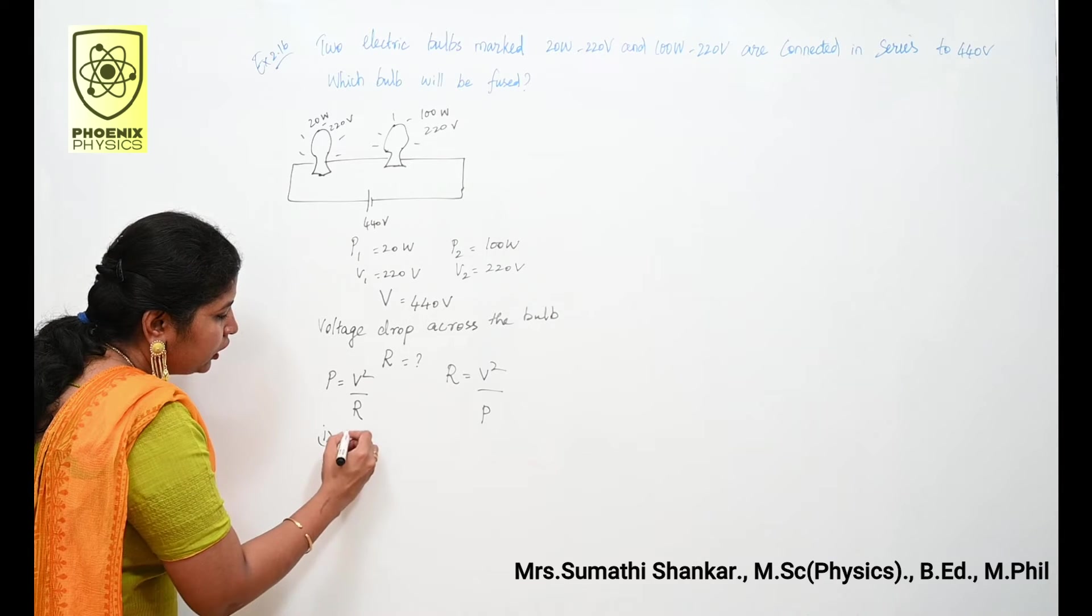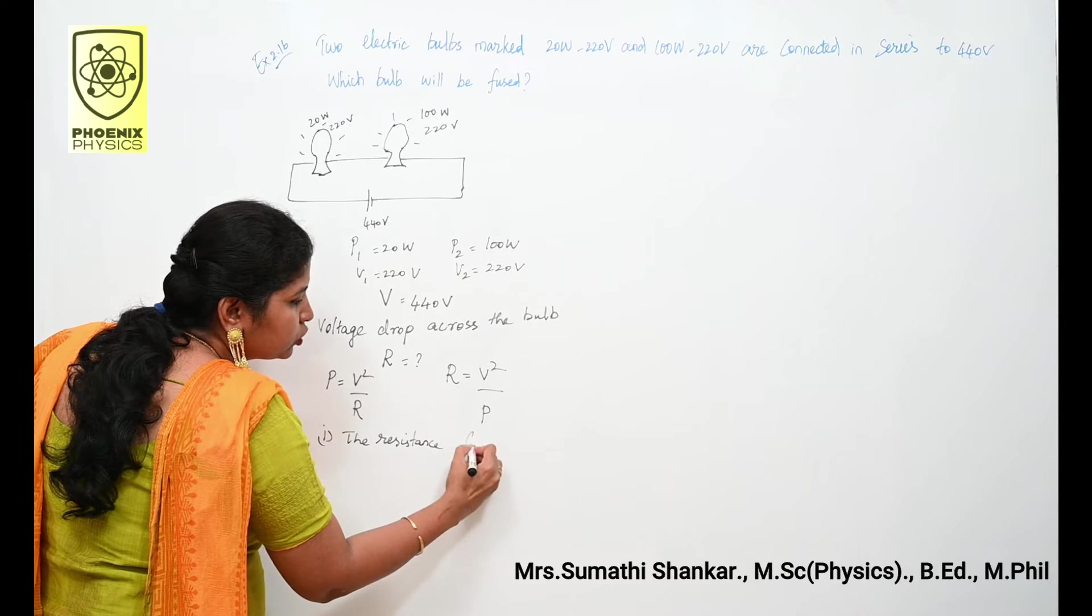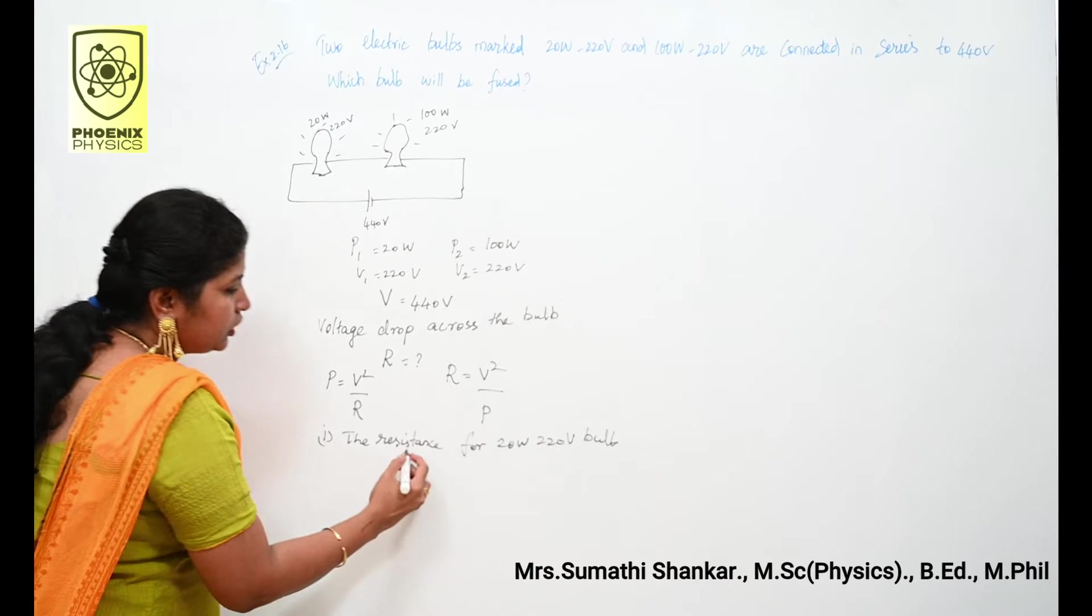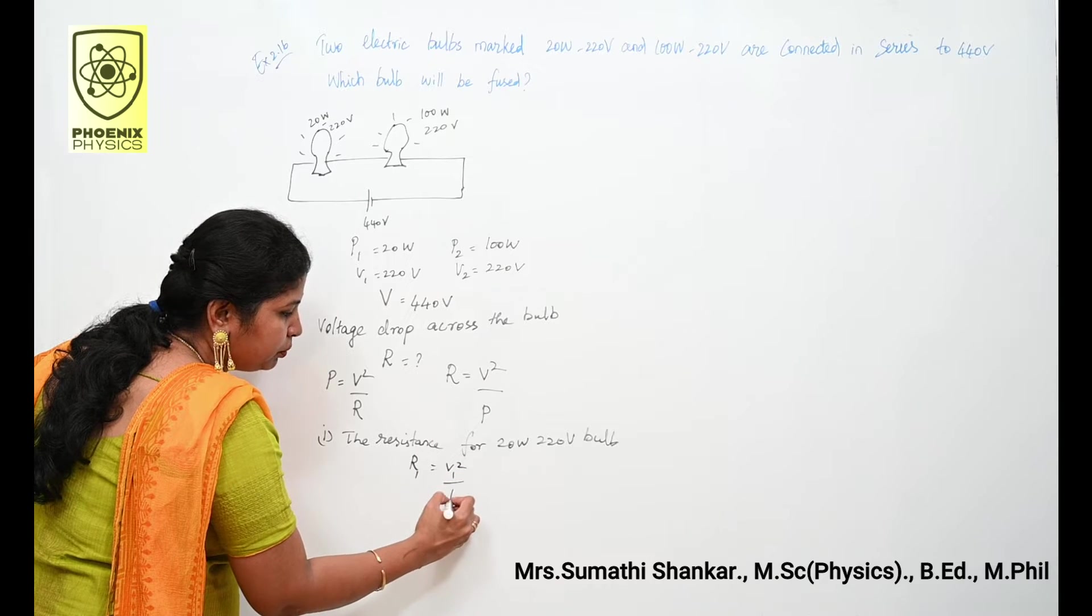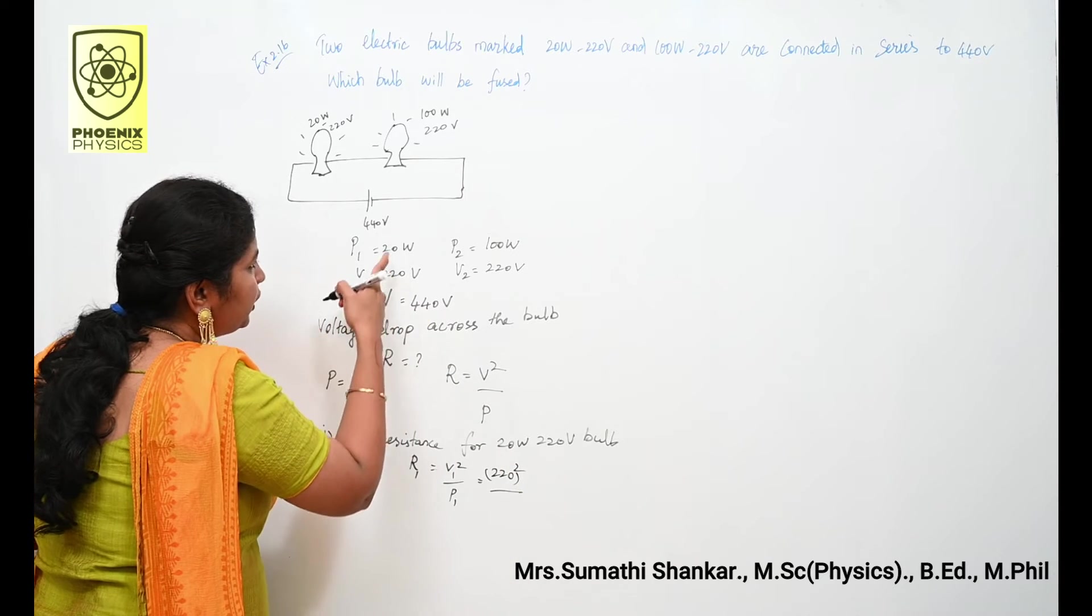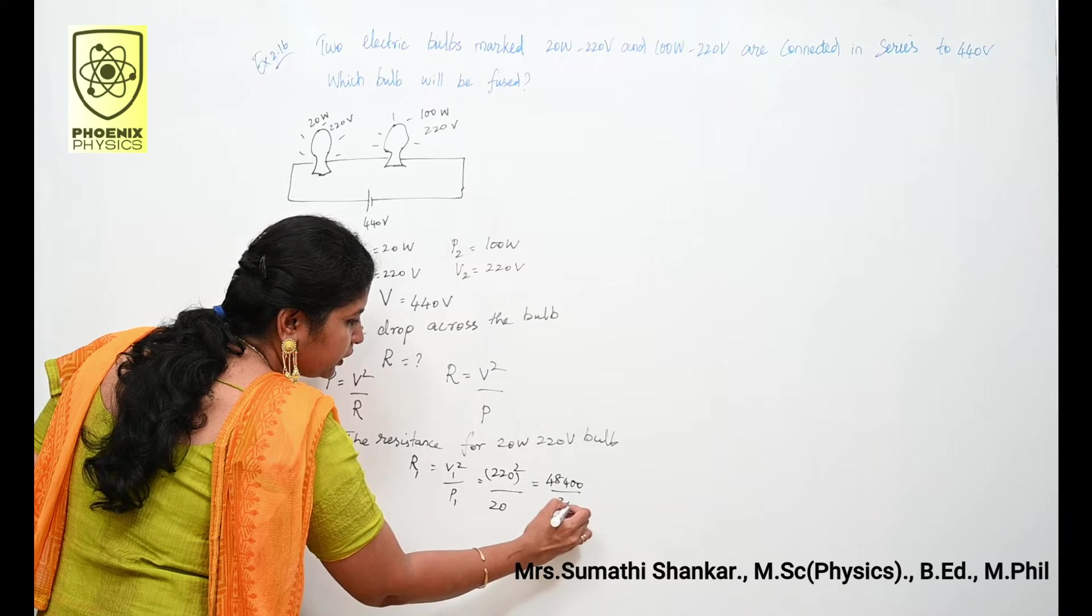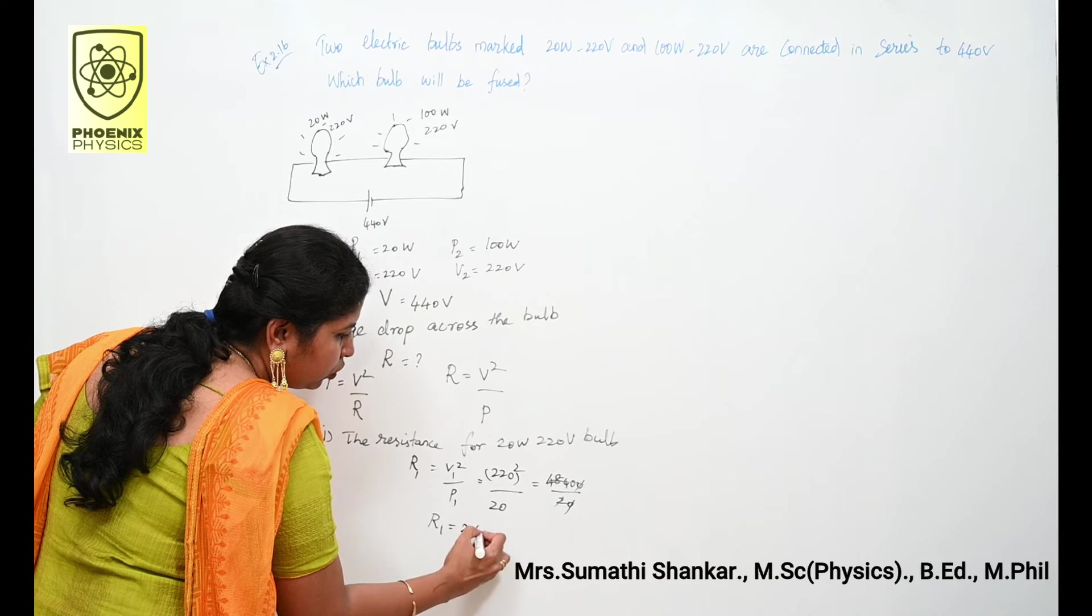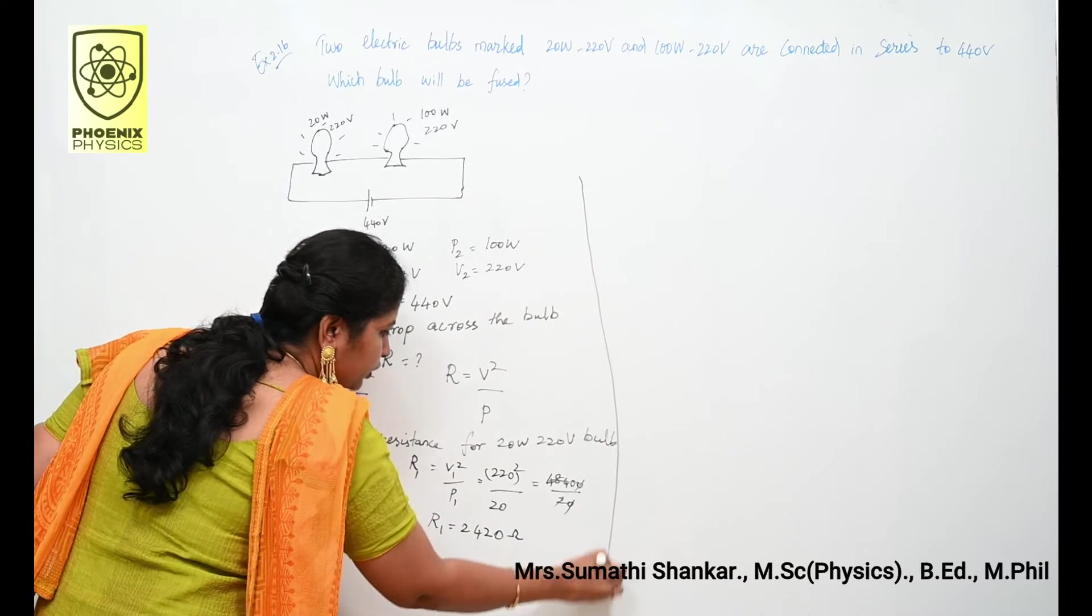First I am going to calculate resistance for 20 watt 220 volt bulb. Consider this resistance is R1. R1 is equal to V1 square by P1. What is V1? That is 220 the whole square divided by P1 is 20. 220 square is 48400 divided by 20, so R1 is equal to 2420 ohm.